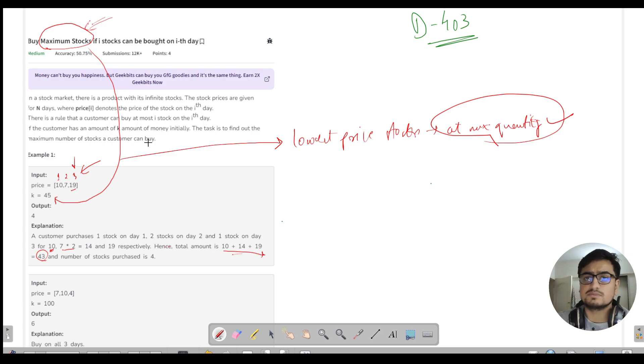For 10, 7, and 19, let's sort in ascending order: 7, 10, and 19, and get the respective indexes. This represents quantity, this represents cost. So this is 2, this is 1, and this is 3. Now my k is 45. The maximum quantity for this stock I can buy is 2, so I'll buy two stocks at 7 each and keep subtracting.